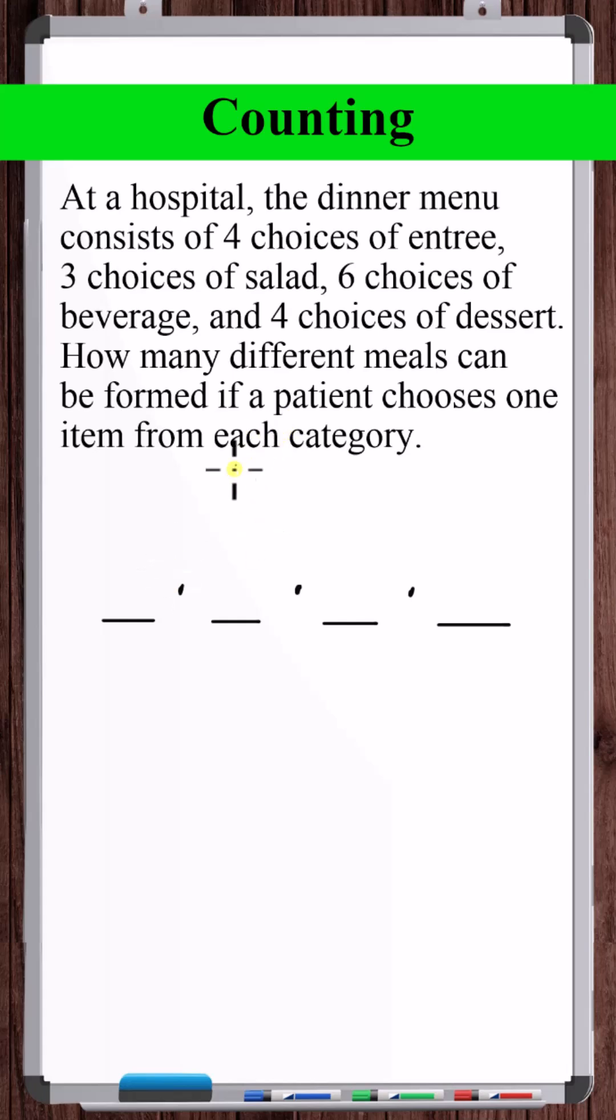And so now the way the product rule works is we take the number of ways that one event can occur. So there's four different entrees, and we multiply that times three choices of salad, times six different ways you can have a beverage, times four different ways you can have a dessert. If you multiply this out, that's 288.